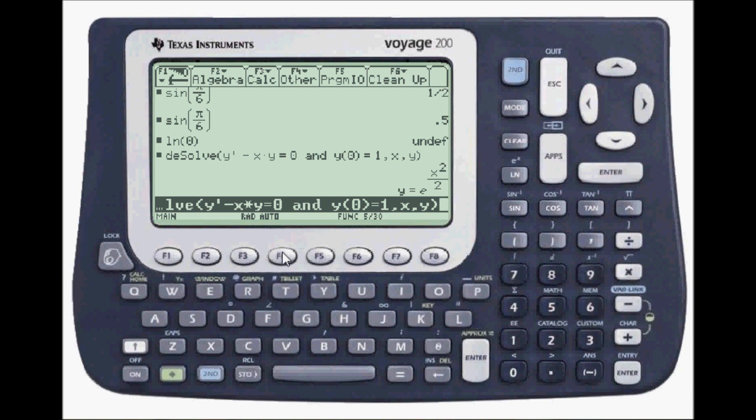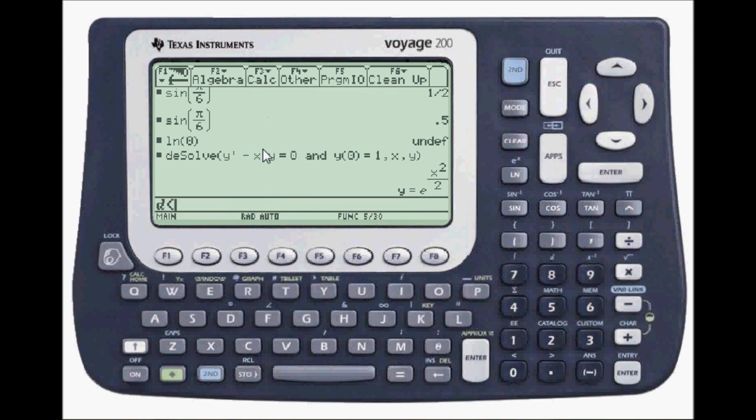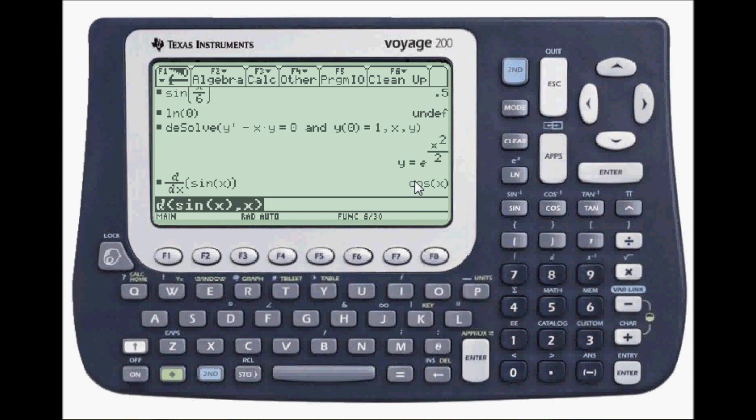After this, let's do differentiation. Differentiation is the first one in the F3 menu. I'm going to differentiate sine of x and do that with respect to x. Press enter. Cosine.